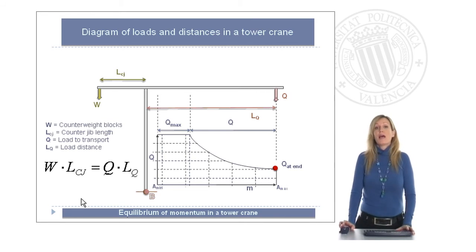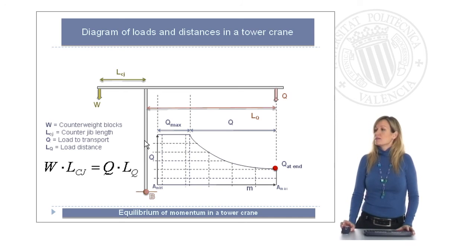So, as a conclusion, application of the equilibrium of momentum in a tower crane allows us to say that the product, load multiplied by load distance, has to be constant. And this means, at the minimum distance, we can have the maximum load. But, at the maximum distance, we have a limitation, which is called the load at the end of the tower crane.